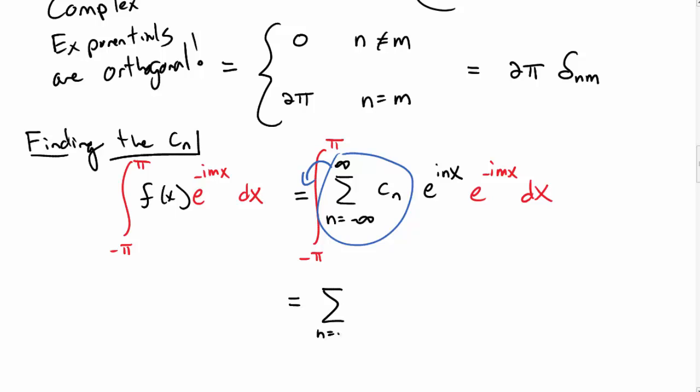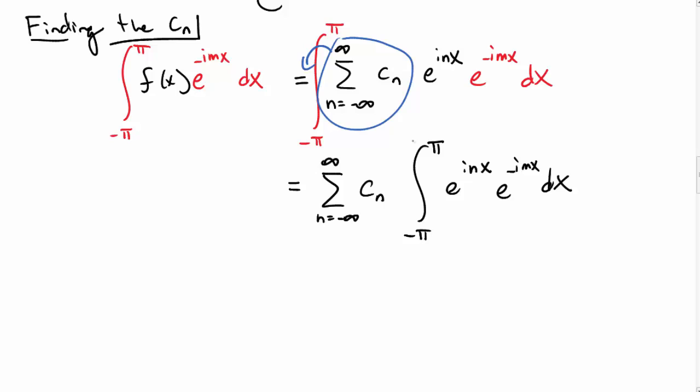The sum over the c_n's, we can pull out of the integral. And so then we have our sum of the c_n's, integral from -π to π, this integral that we actually just computed above. And so we found that this integral was 2π δ_mn. And so then we get a sum over all n, c_n 2π δ_mn.